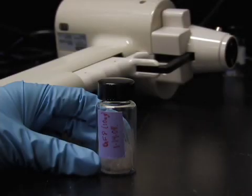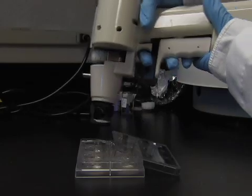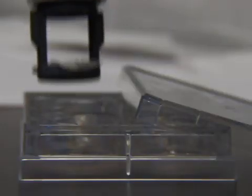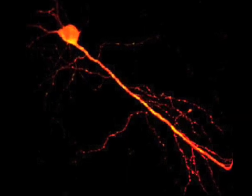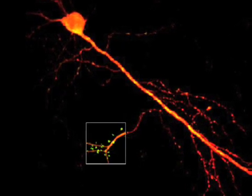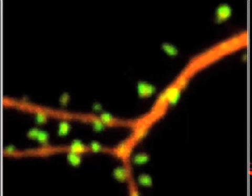I've just shown you how to prepare gene gun bullets and how to transfect hippocampal slices using biolistic transfection. This is an extremely powerful method for performing morphological studies on single neurons that can be imaged in isolation. So that's it. Thanks for watching, and good luck with your experiments.